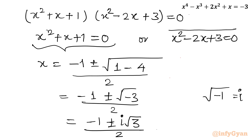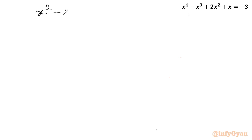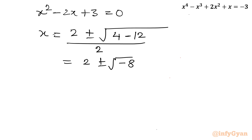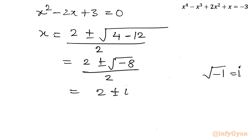Now for the second equation, x² − 2x + 3 = 0. Applying the quadratic formula: x = (2 ± √(4 − 12)) / 2 = (2 ± √(−8)) / 2. Since √(−8) = i·2√2, this simplifies to x = (2 ± 2i√2) / 2 = 1 ± i√2.